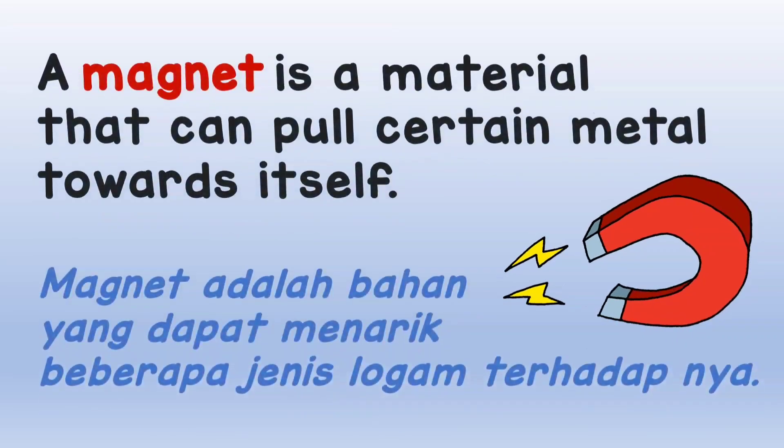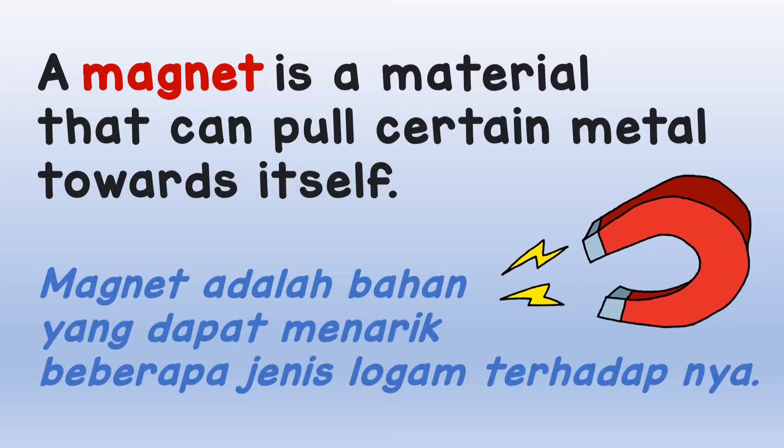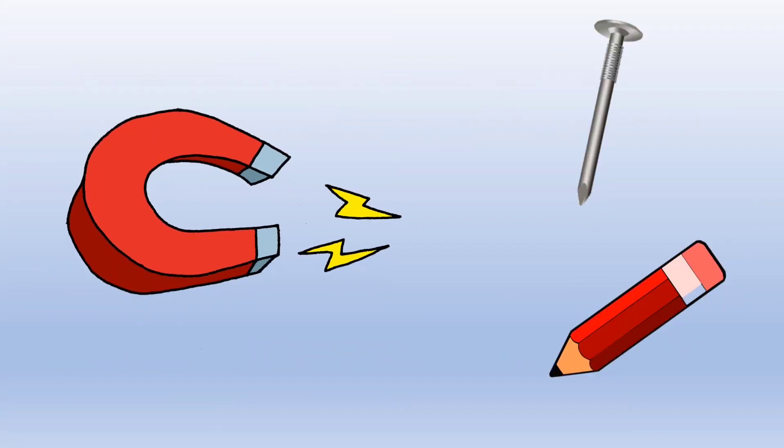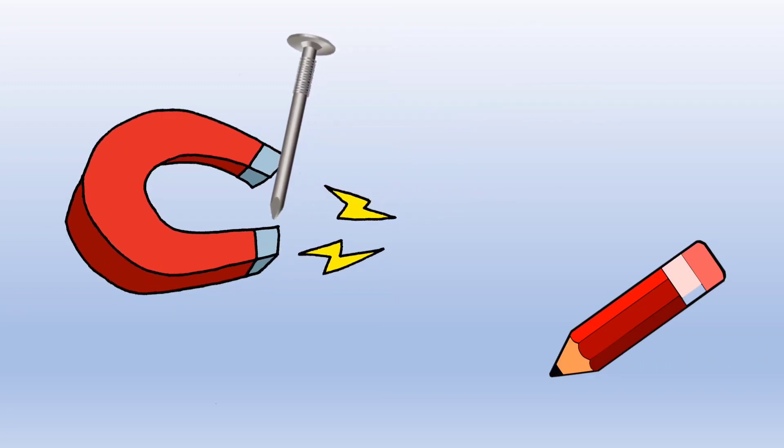Let's recall, a magnet is a material that can pull certain metal towards itself. Look, the magnet can attract the nail but does not attract the pencil.